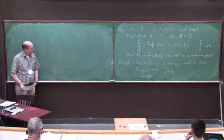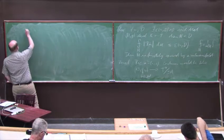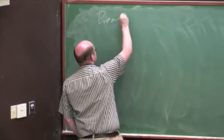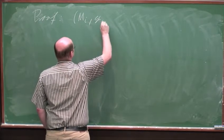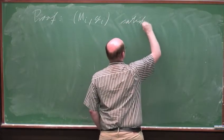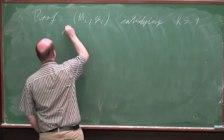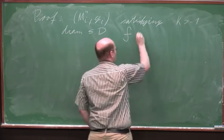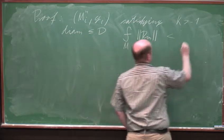Let me talk a little about the proof. The proof is not effective — we argue by contradiction. Suppose we have a sequence of manifolds satisfying curvature larger than minus 1, diameter less than D, and the integral of the curvature operator less than 1 over 2 to the i, and the conclusion is that M is not a finite cover of a flat manifold.